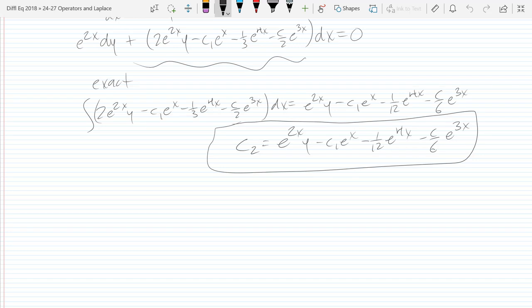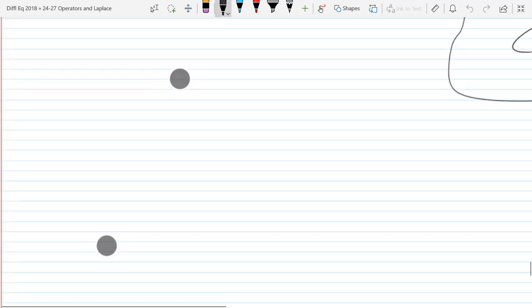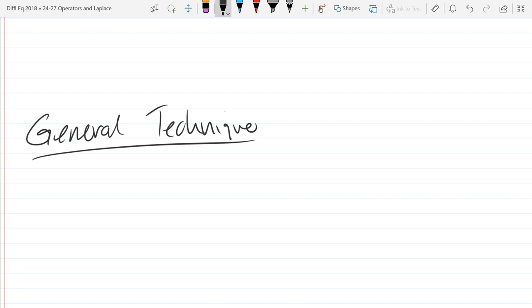So I'm going to describe the general technique right now of the process we just did. We start out a_n D^n plus a_(n-1) D^(n-1) plus et cetera, et cetera, a_0.